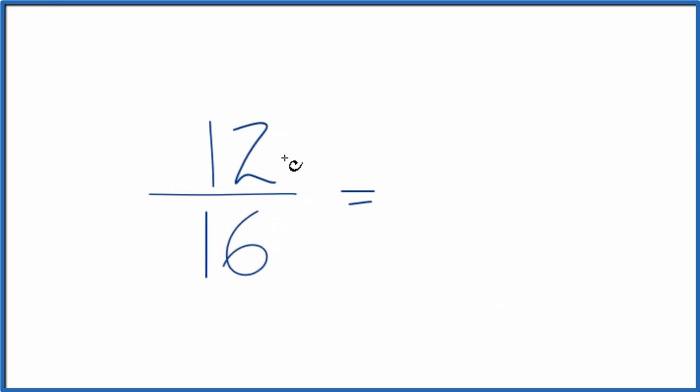So for 12 16ths, since we have even numbers, let's just simplify it. Let's divide 12 by 2 and 16 by 2. 12 divided by 2 is 6. 16 divided by 2 is 8.